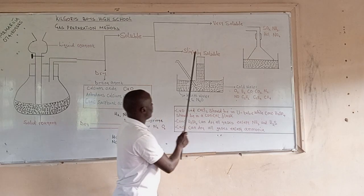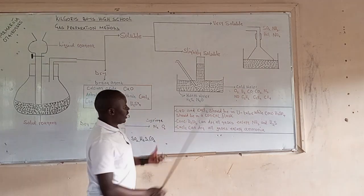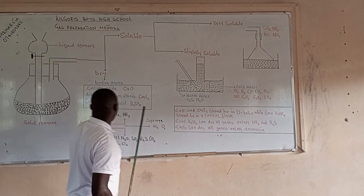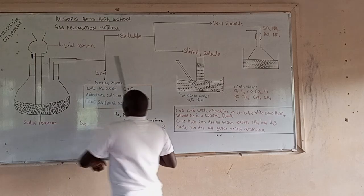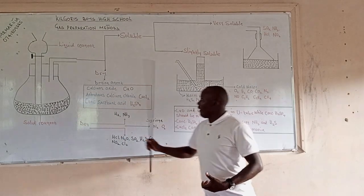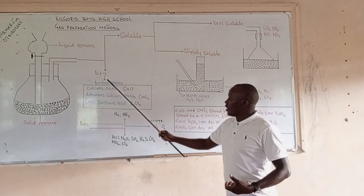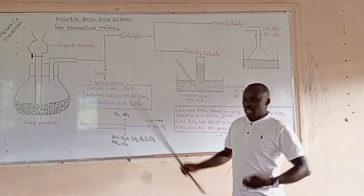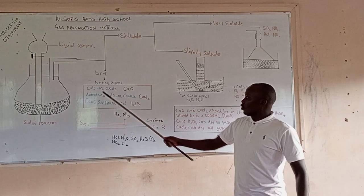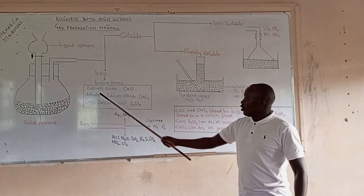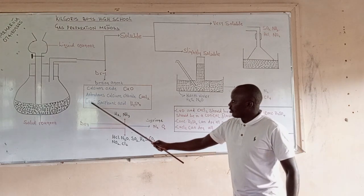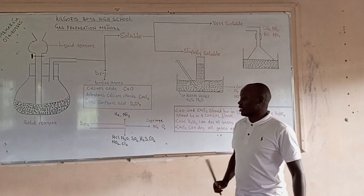All these gases are slightly soluble in water and therefore they are collected over cold water. Once gases have been prepared, they can be dried. The commonly used drying agents are calcium oxide, anhydrous calcium chloride, and concentrated sulfuric acid.